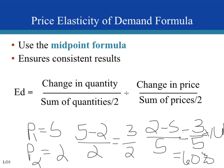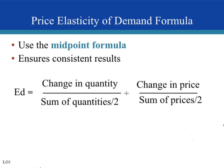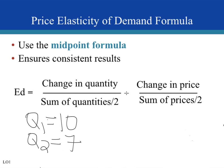What we want is consistent results where the change from price 1 to price 2 is the same as the change from price 2 back to price 1. We do that using the midpoint formula. For example, let's say quantity 1 is 10, quantity 2 is 7, price 1 is 5, and price 2 is 2.